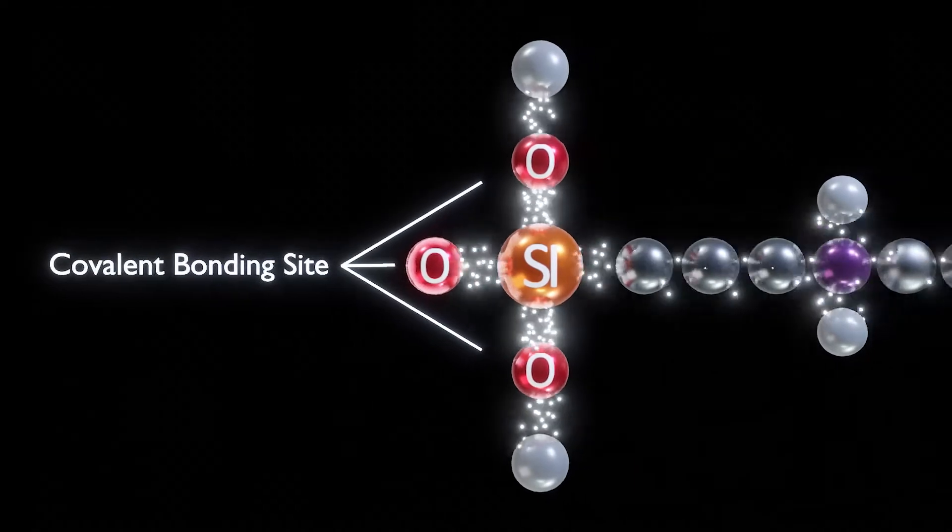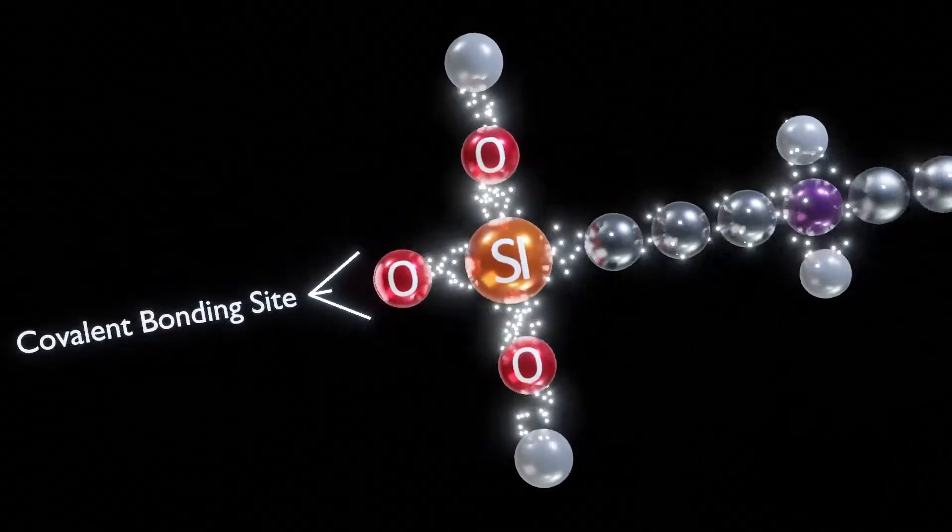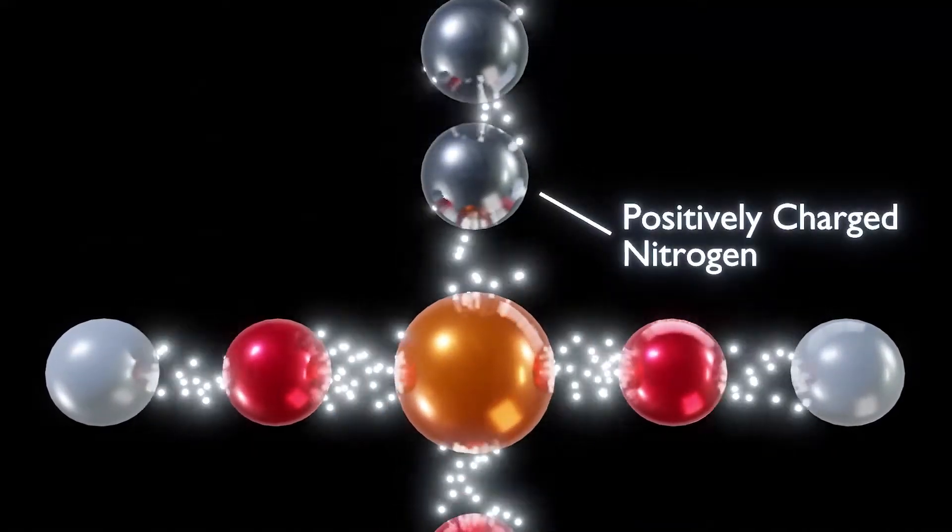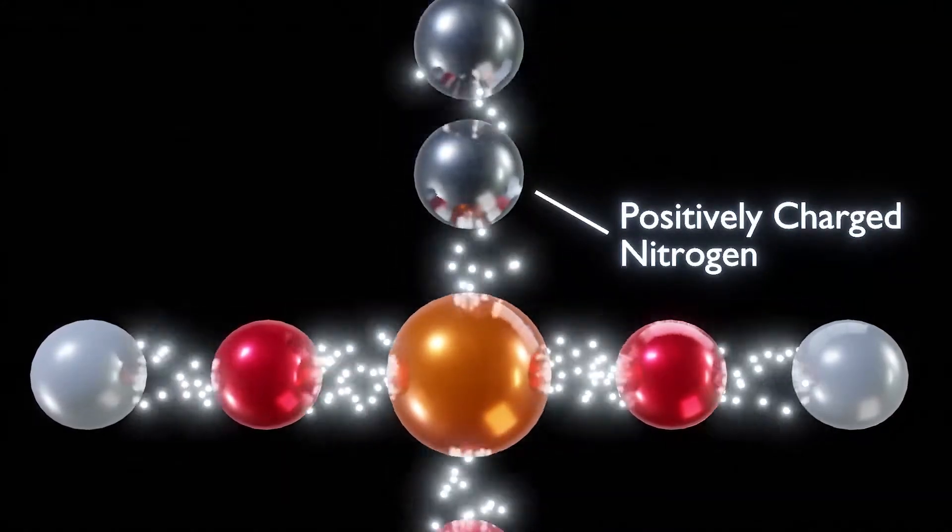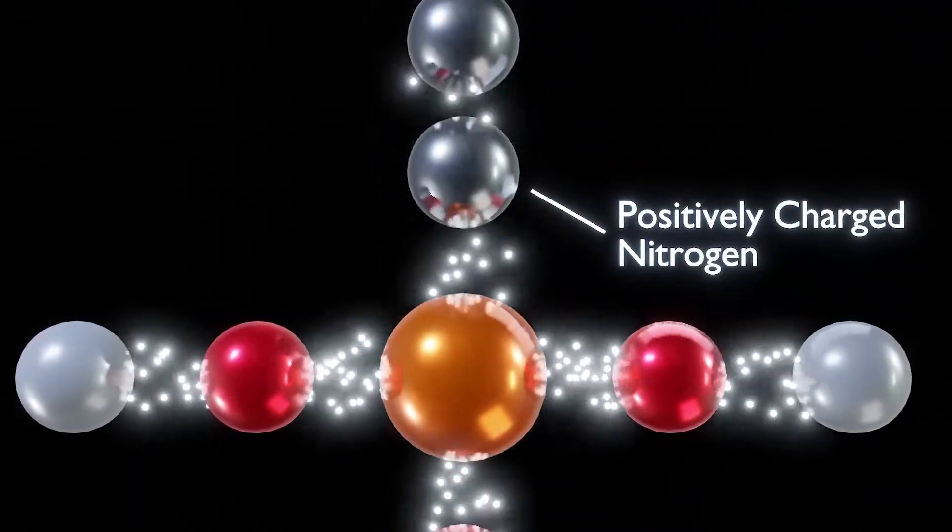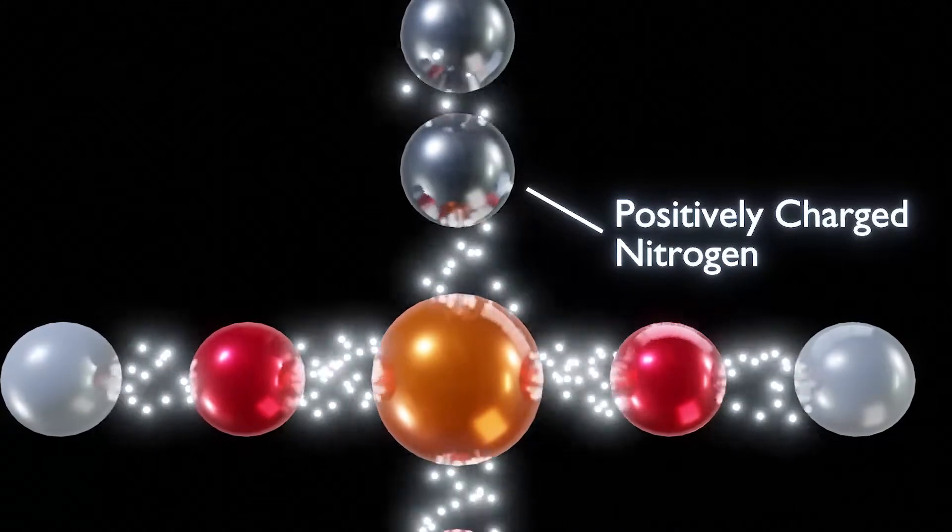It allows for cross-linking and polymerization with other molecules. The second part of the molecule is its centrally located, positively charged nitrogen. This positive nitrogen plays an important role in the active nature of the antimicrobial.